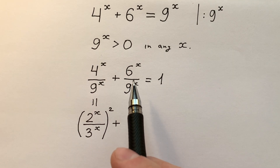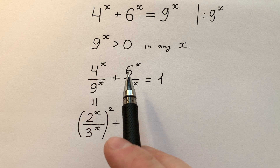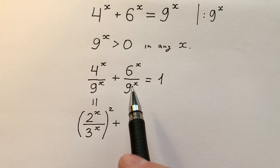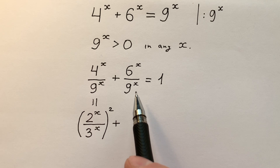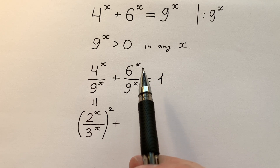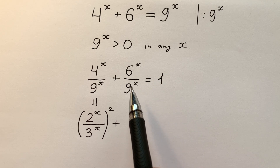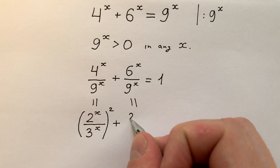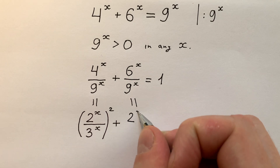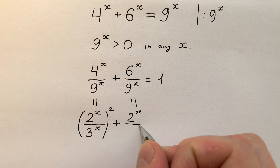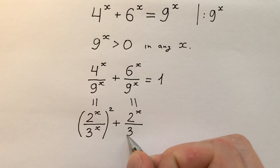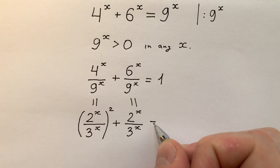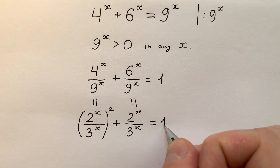Looking at the second term, we see that 6 equals 3 times 2, and 9 equals 3 times 3. Then, dividing numerator and denominator by 3 to the power of x, we get 2 to the power of x divided by 3 to the power of x, and it equals 1.